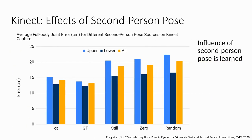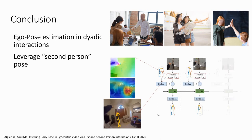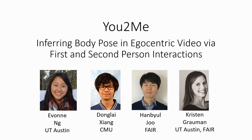In summary, we introduce a method for ego pose estimation in dyadic interactions that explicitly leverages first- and second-person interaction dynamics to achieve improved ego pose estimates.